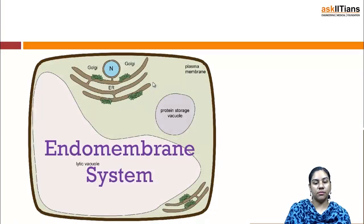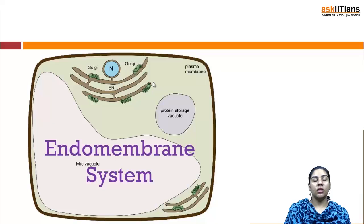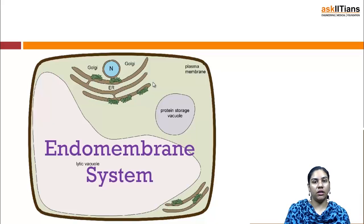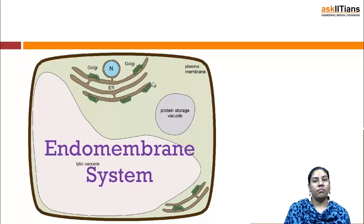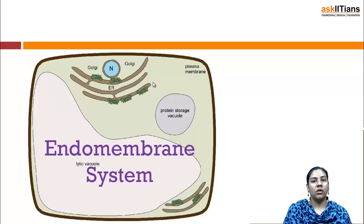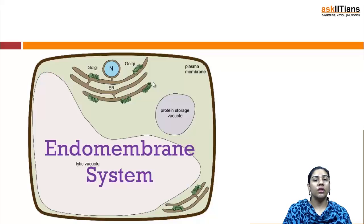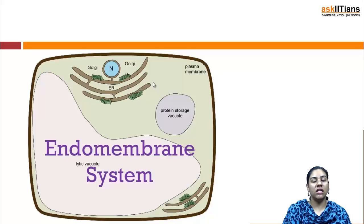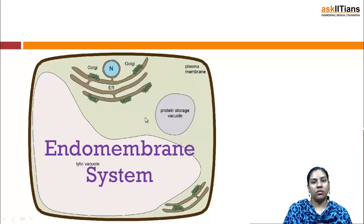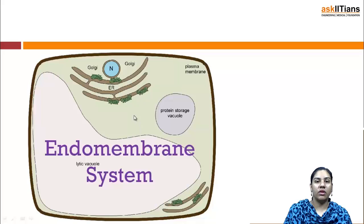The endomembrane system includes endoplasmic reticulum, Golgi bodies, lysosomes, and vacuoles. Other organelles like mitochondria, plastids, and peroxisomes — the functions of all of these organelles are not coordinated with the endomembrane system in any way. So mitochondria, plastids, and peroxisomes are not included in the endomembrane system.